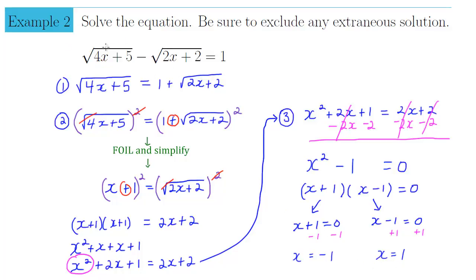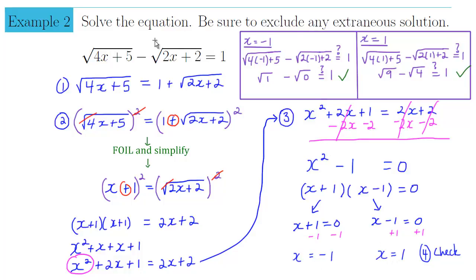We have to check all proposed solutions by plugging them back into the original equation. Plugging in x = −1: √(4(−1)+5) − √(2(−1)+2) = √(1) − √(0) = 1 − 0 = 1. This checks out, so x = −1 is a valid solution.